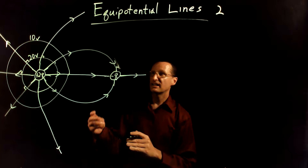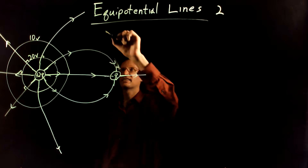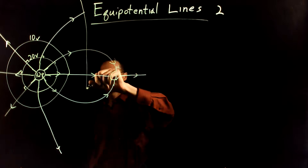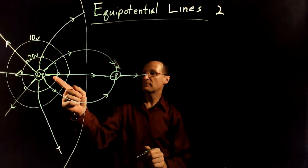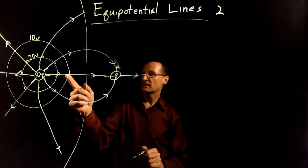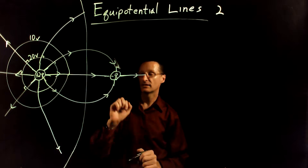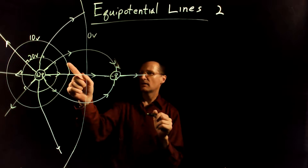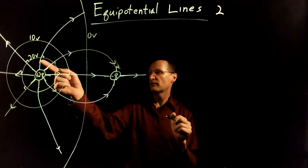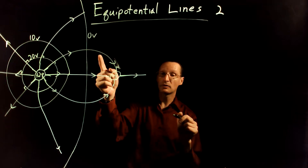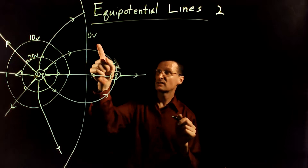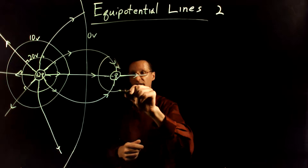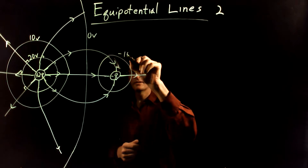The zero volt line is going to be where this is rather flat here, so it's going to look kind of like this. It's not quite midway between because this is a larger charge than this one. So this is the zero volt line. Notice I'm going from high potential, and as I move towards the negative charge I'm going towards low potential. What's lower than zero? Negative. So this equipotential line here is going to be the negative 10 volt line.